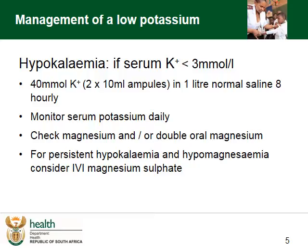Let us start with the management of a low potassium. If the serum potassium is less than 3 millimoles per liter, it is essential to replace with IVI potassium by adding 2 ampules of elemental potassium to 1 liter of normal saline — that is a total of 40 millimoles of potassium — and infuse it slowly over 8 hours. Potassium levels must be measured daily, and if possible check the magnesium, or at least double the oral magnesium dose.